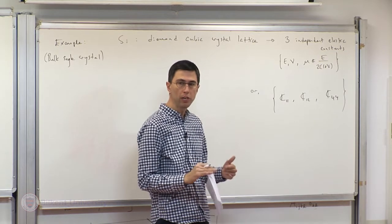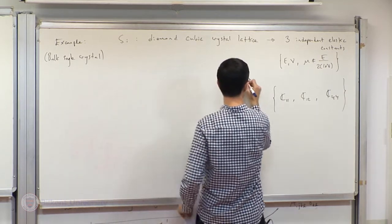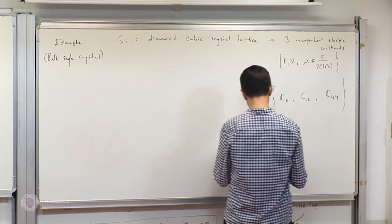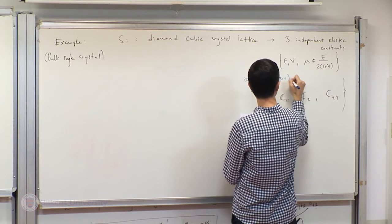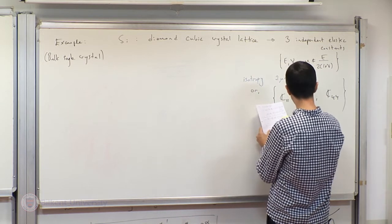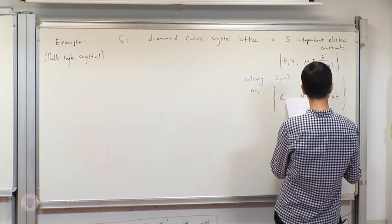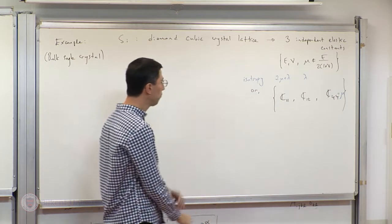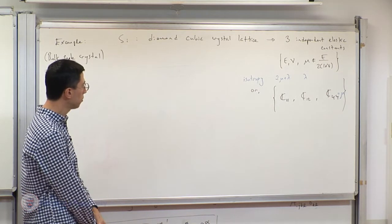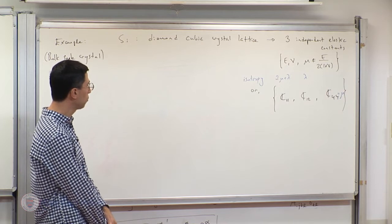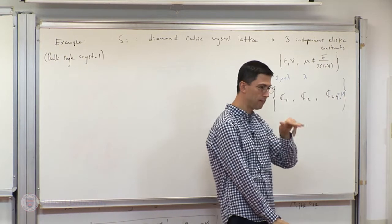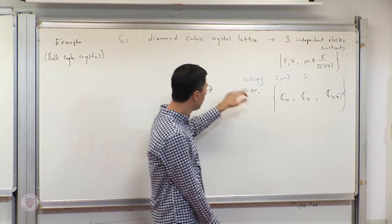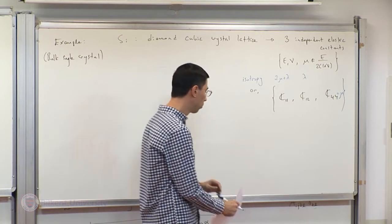If we had isotropy, there would be relations among these constants: C11 = 2mu + lambda, C12 = lambda, and C44 = mu. For cubic symmetry, C44, C55, C66 are non-zero and equal to mu. For the case of isotropy the remaining ones would be related, but for cubic symmetry they are not.